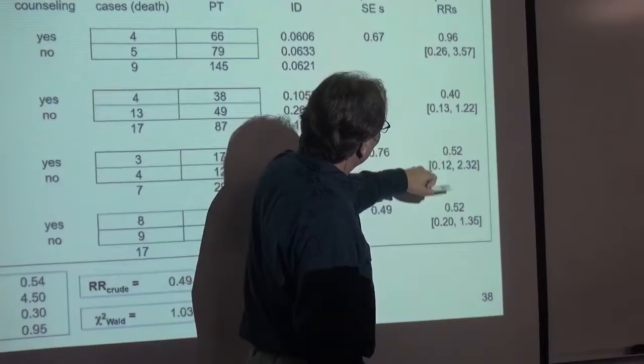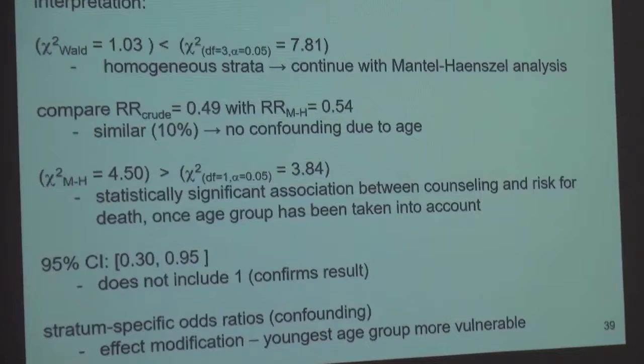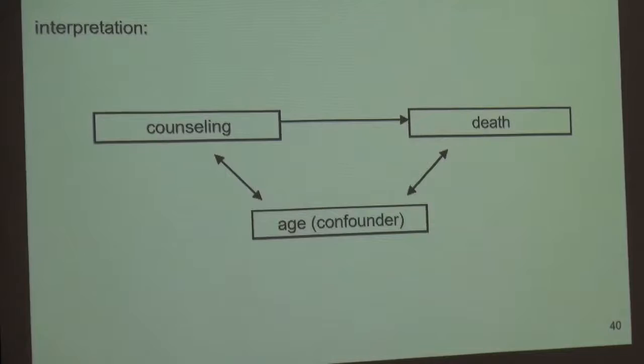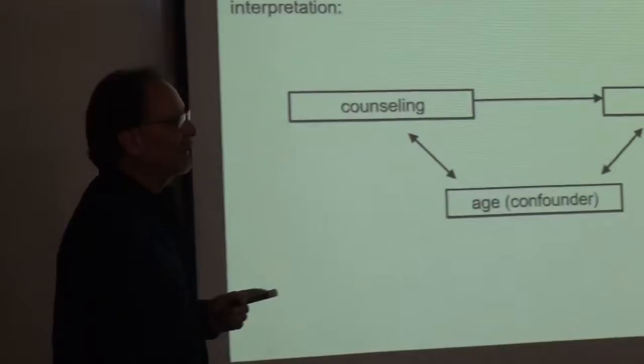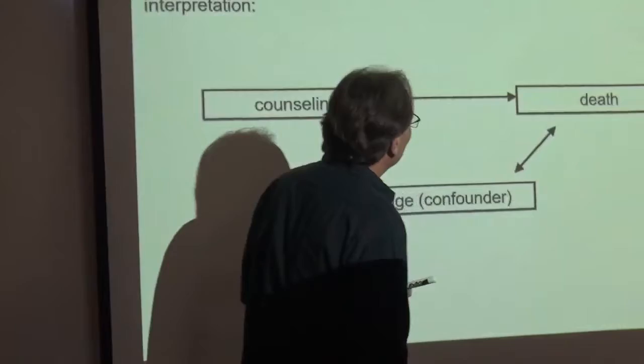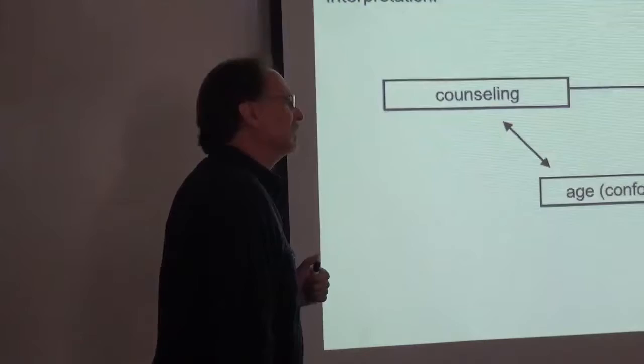Even though they're not significant, if we look at the protective effect across these relative risks versus that one, there's some potential for effect modification. Since the delta percent is at the cusp, I put age as a potential confounder but say it's no confounding. The effect would be that age influences your likelihood of seeking counseling, and age is associated with death. But the counseling and death relationship may not be direct — it may actually be age driving it.